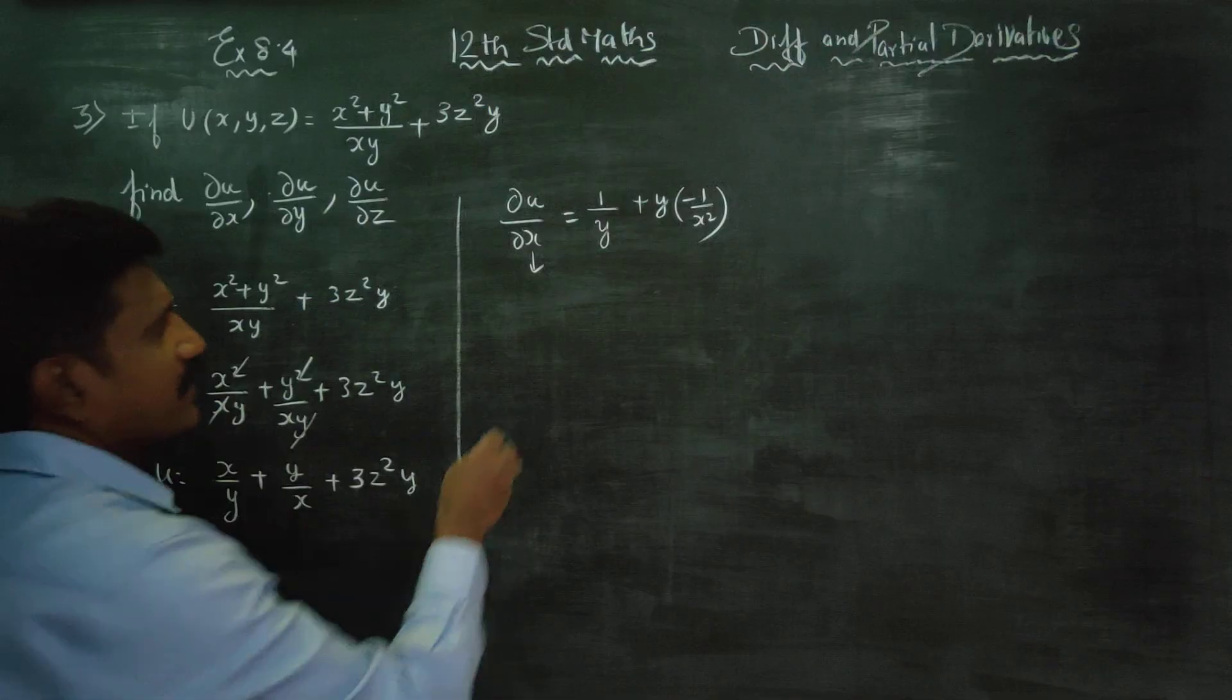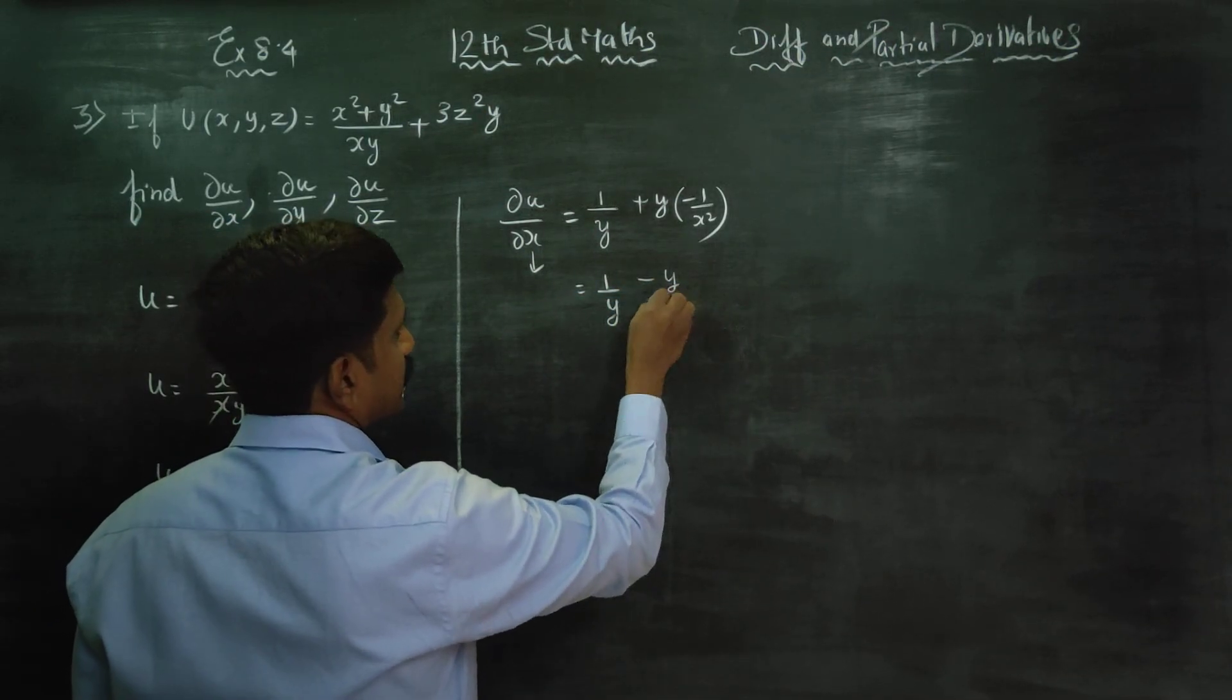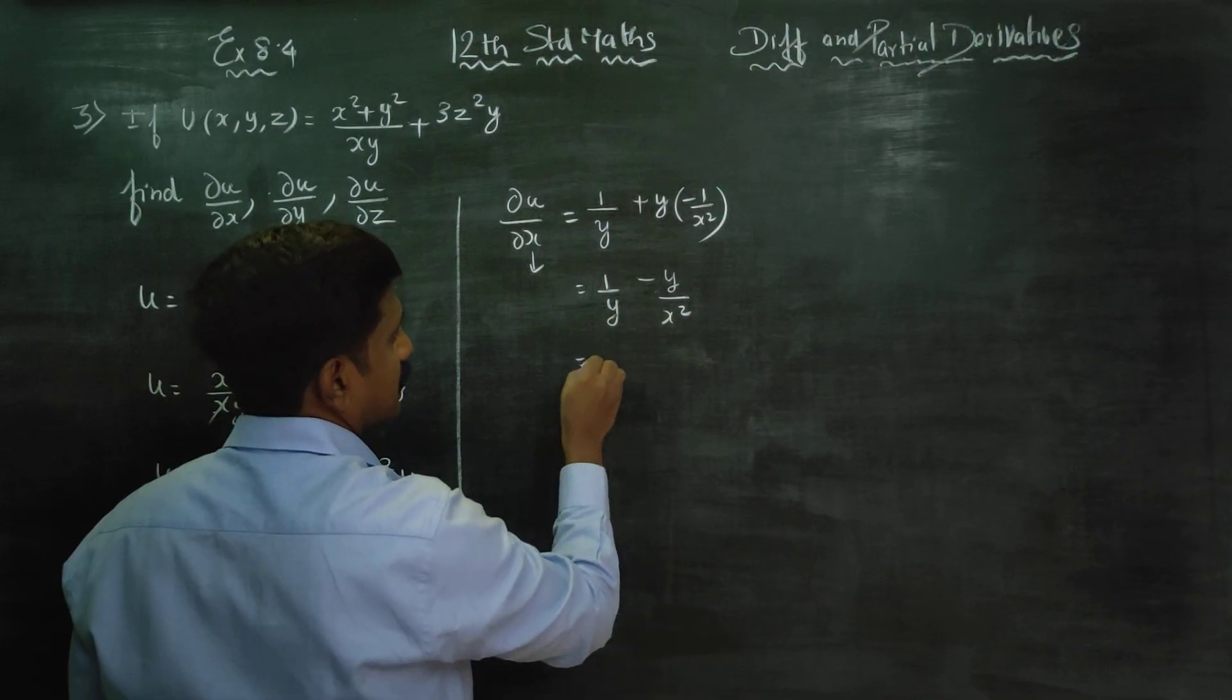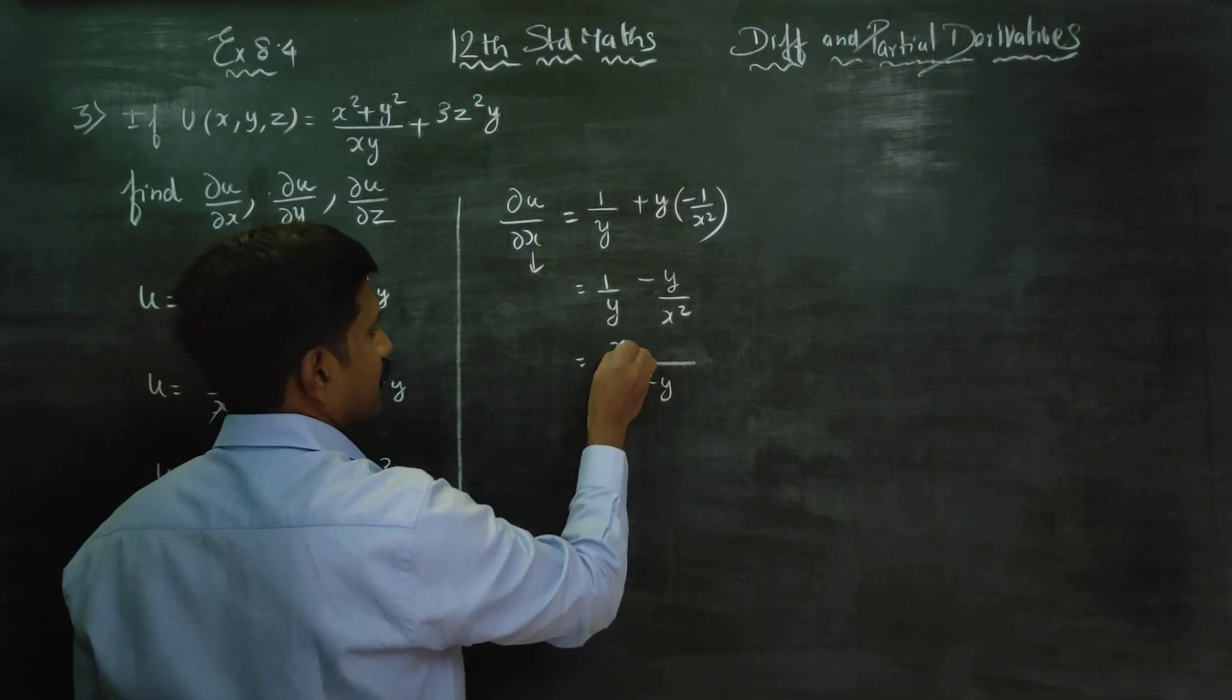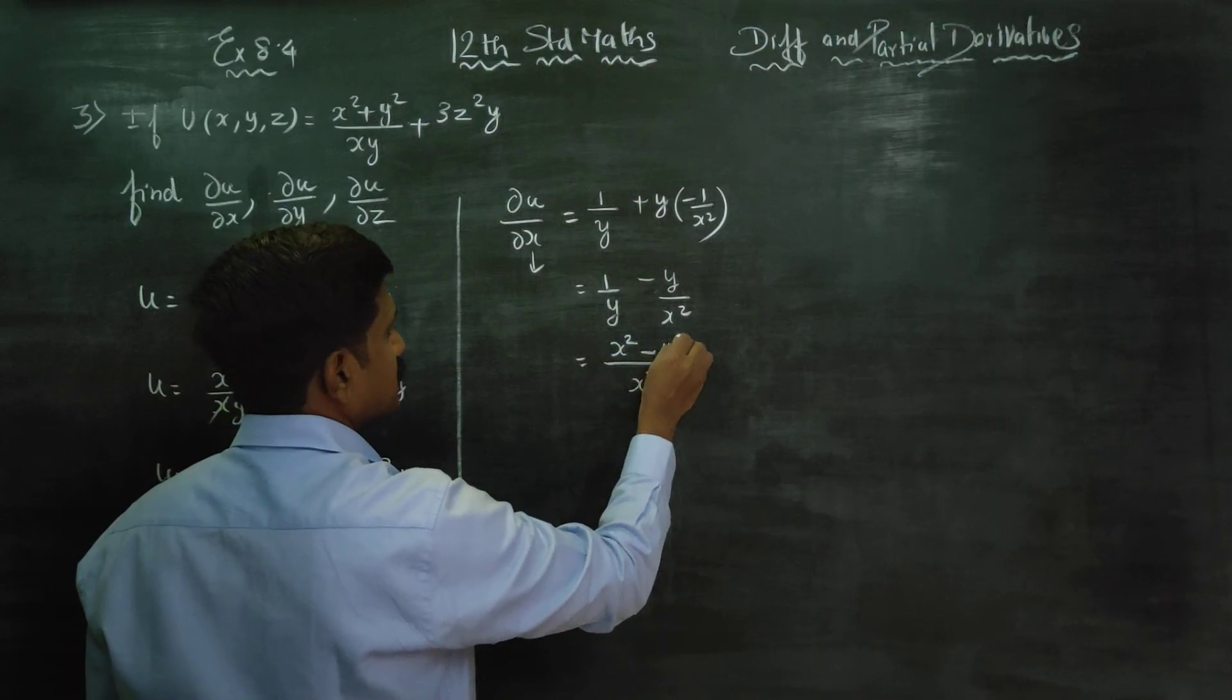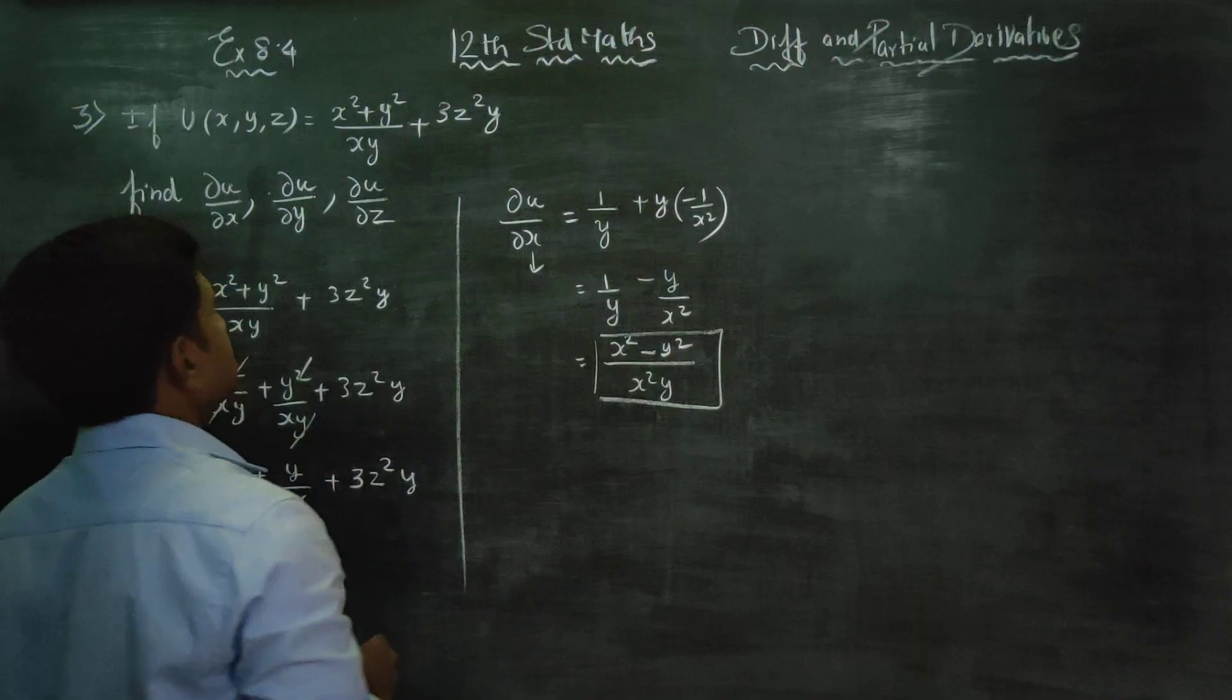If you want, you can simplify: 1 by y minus y by x square. Your LCM will be x square y. Cross multiply: x square minus y square will be your first answer.